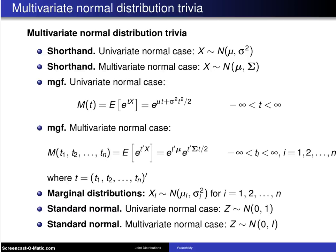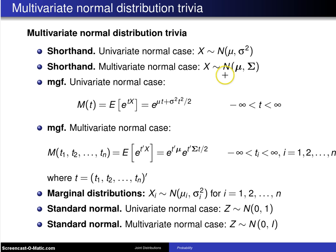For the multivariate normal distribution, we'll start with a little bit of notation. The shorthand for the univariate normal case was: X is distributed as a normal random variable with population mean mu and population variance sigma squared. That shorthand generalizes to the multivariate normal case — X, a random vector, is distributed as a multivariate normal distribution with population mean vector mu and population variance-covariance matrix sigma.